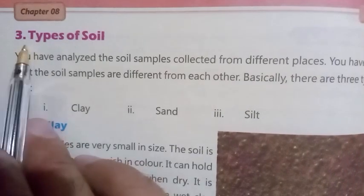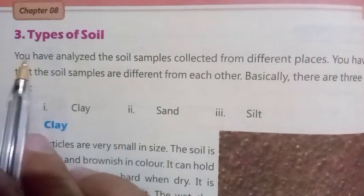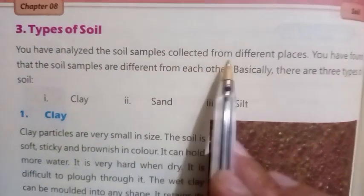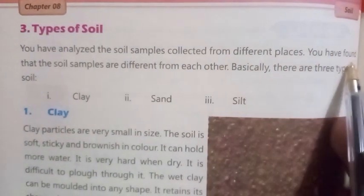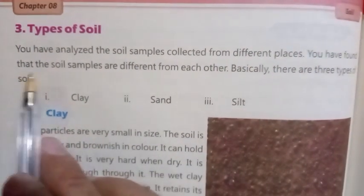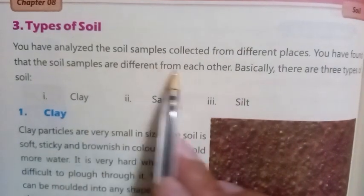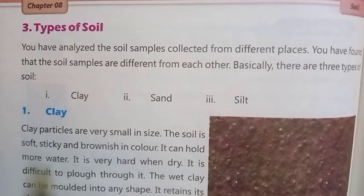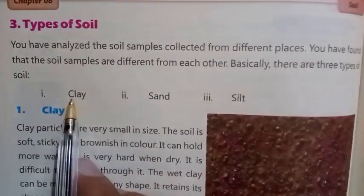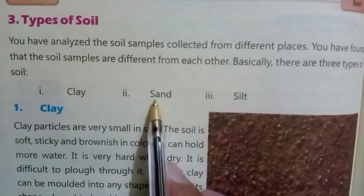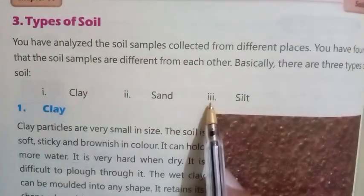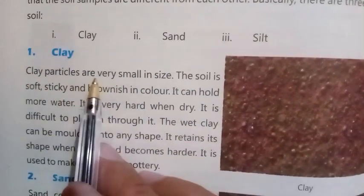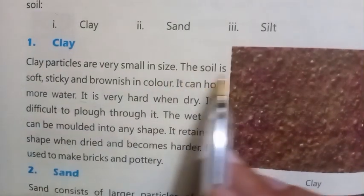Number three: Types of soil. You have analyzed soil samples collected from different places and found that the soil samples are different from each other. Basically there are three types of soil: number one, clay; number two, sand; number three, silt. Number one: Clay. Clay particles are very small in size.